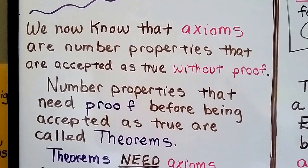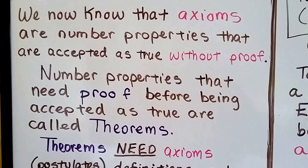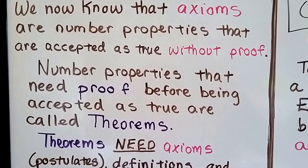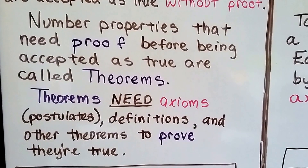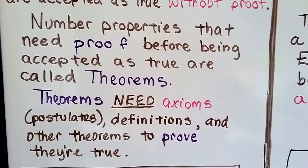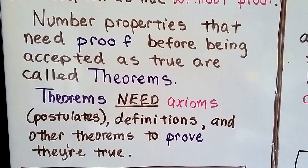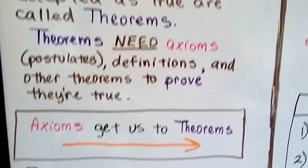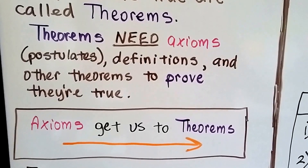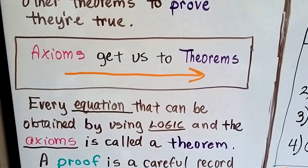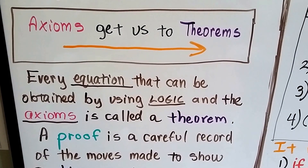We now know that axioms are number properties that are accepted as true without proof. Number properties that need proof before being accepted as true are called theorems. Theorems need axioms — postulates, which are the same thing as an axiom — and definitions and other theorems to prove they're true. Every equation that can be obtained by using logic and the axioms is called a theorem.